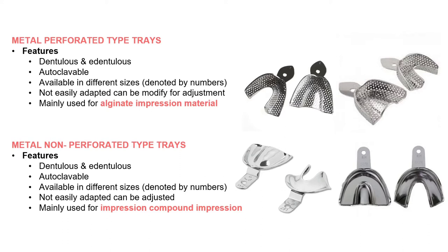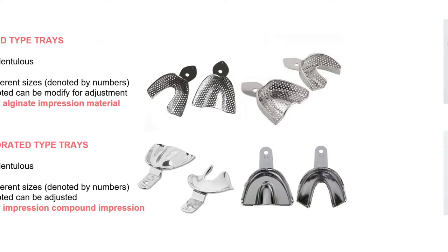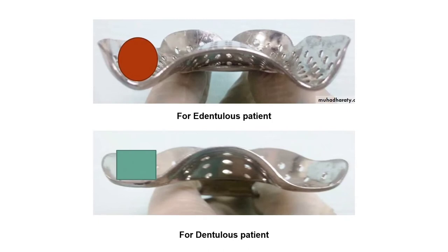The trays can be modified using pliers. When choosing alginate as an impression material, you will use the perforated tray, and for impression compound you will select the non-perforated tray. For tray cross-section selection: a dentate patient will have a rounded cross-section and a squarish cross-section for the edentulous patient.